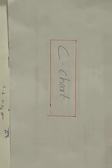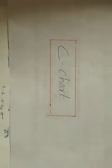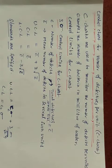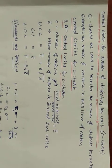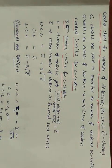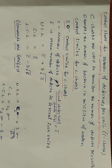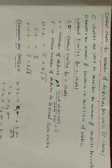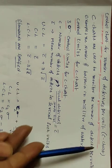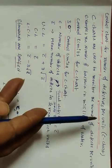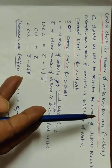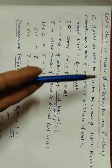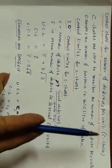C chart — a control chart for attributes — is what we are going to discuss. C chart is a control chart for number of defectives per unit. Number of defectives per unit — this is C chart. Number of defectives — P chart is a fraction defective chart. C chart is for number of defectives per unit.